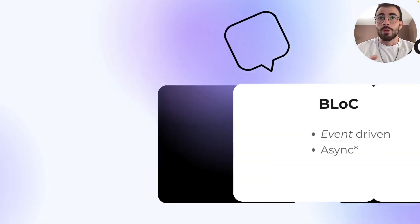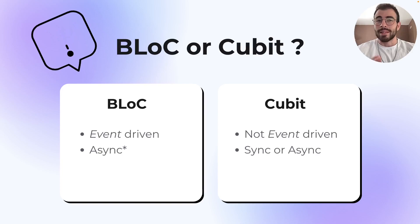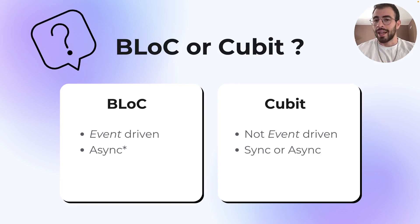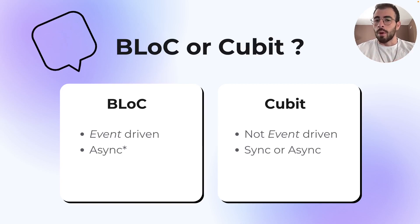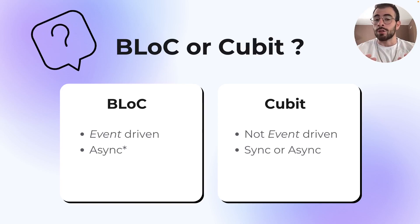So the BLoC or the Cubit — you might have seen the Cubit pop up in the documentation and wonder what it is. To make it simple: a BLoC is event-driven and a Cubit is not event-driven. I'll come back to this in a later slide and you'll see it's easy to understand. The second important difference is that a BLoC will give you a stream of state — asynchronous, with the asterisk meaning it's a stream. A Cubit can be synchronous or asynchronous, but in terms of a future.